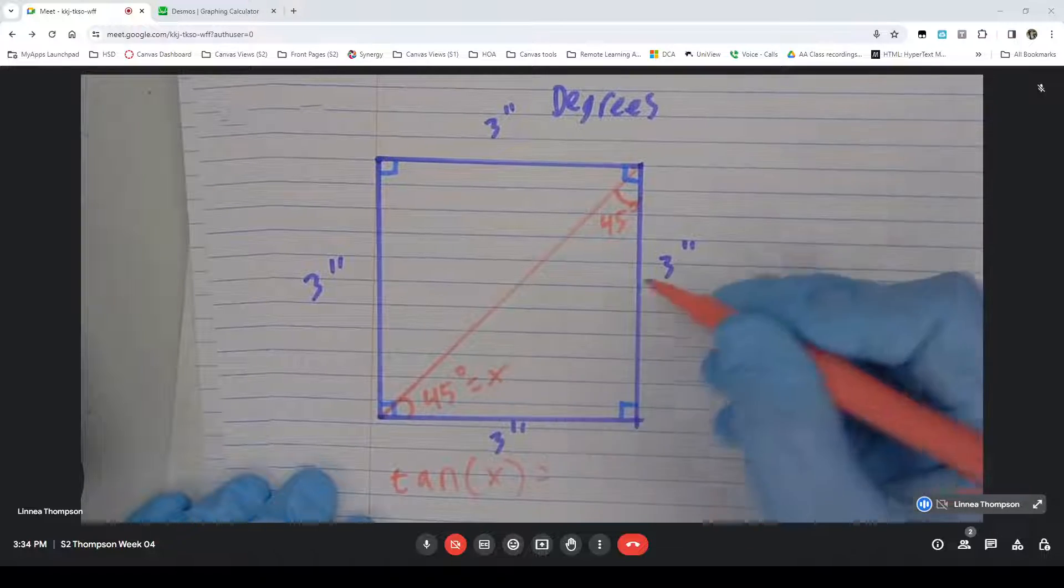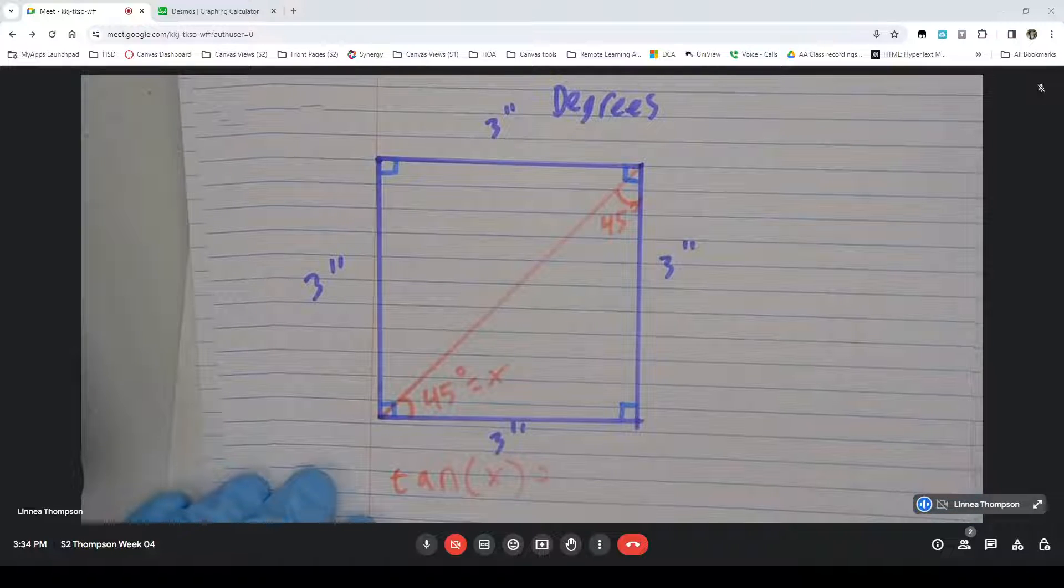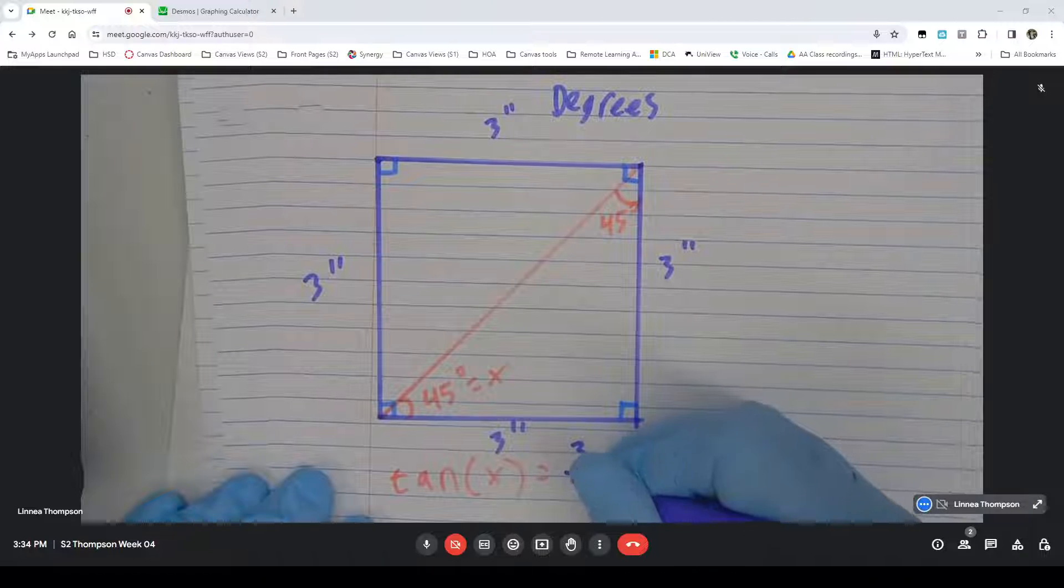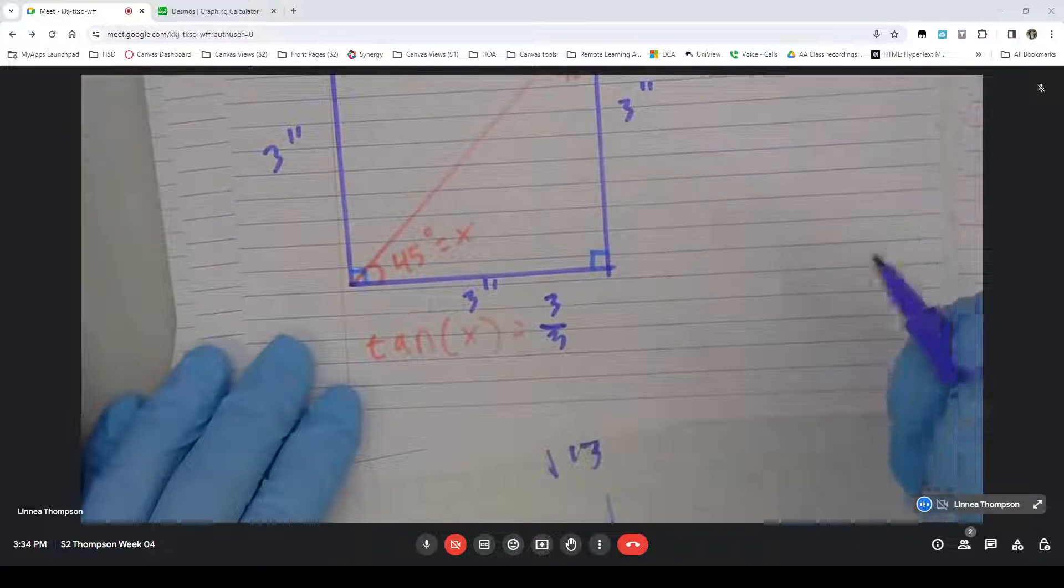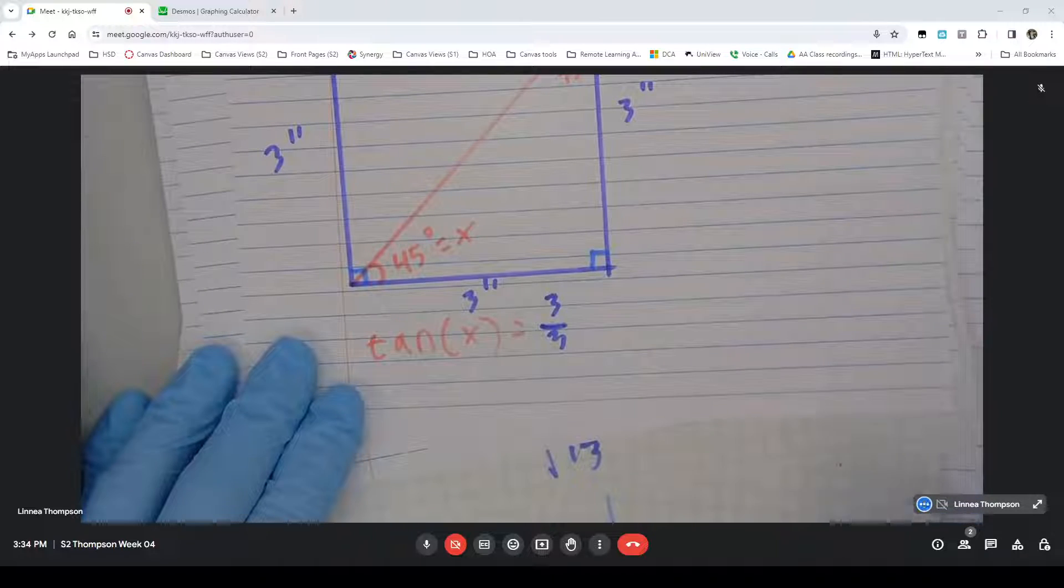That would be opposite, which is 3, over adjacent, which is also 3. Since I have the same number on the top and the bottom, that means that it's going to equal 1.